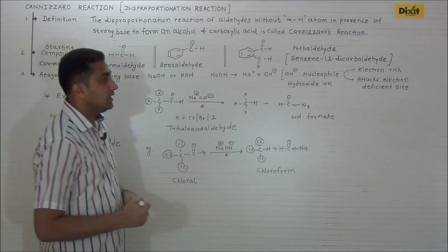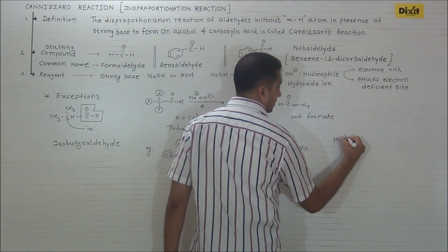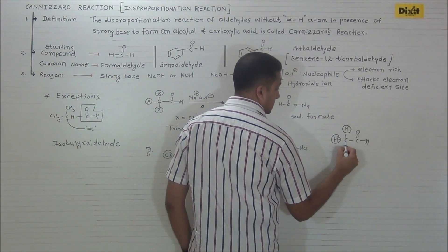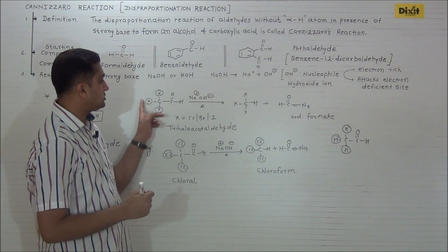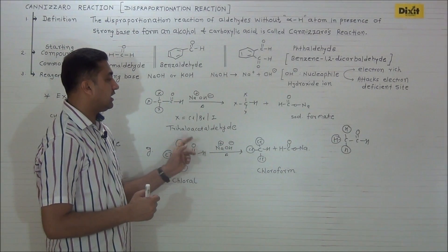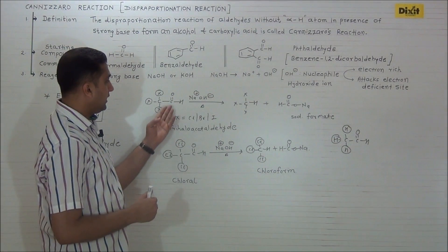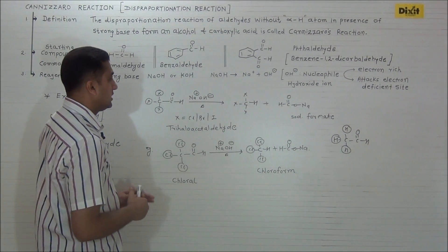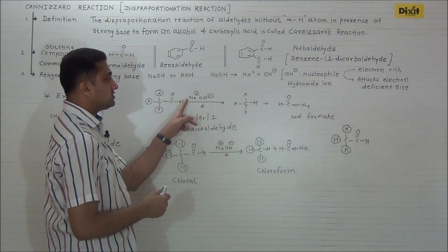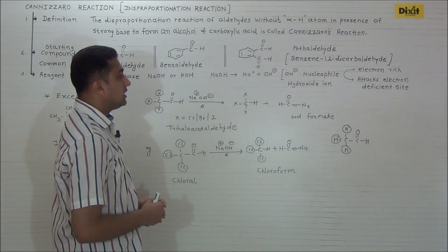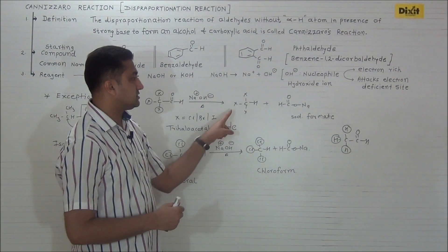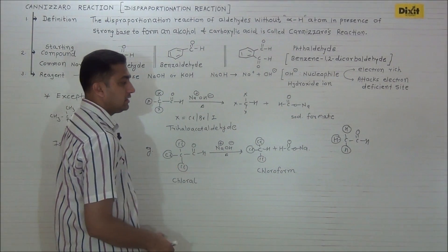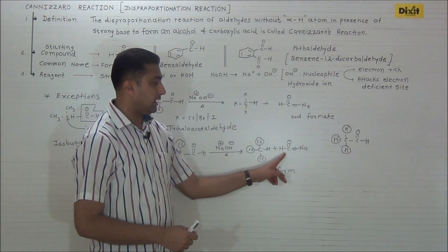Here is another example: trihaloacetaldehyde. If we consider acetaldehyde CH₃CHO and replace three hydrogen atoms on the alpha carbon by halogen — either chlorine, bromine, or iodine — we get trihaloacetaldehyde. It is clear from the structure that the alpha carbon does not contain any hydrogen. When trihaloacetaldehyde is heated with strong base, it will not show Cannizzaro reaction; it will undergo hydrolysis forming a haloform. Example: chloral, when heated with sodium hydroxide, will form chloroform and sodium formate.